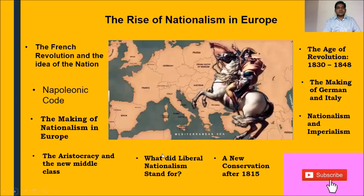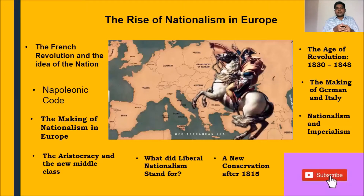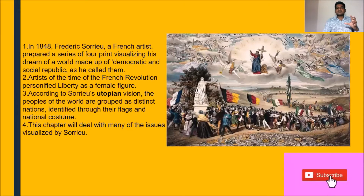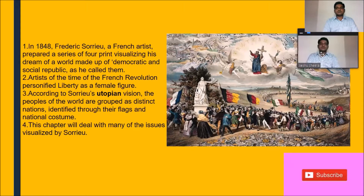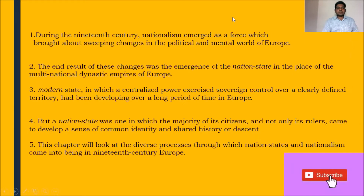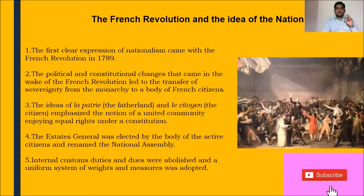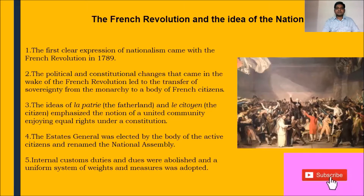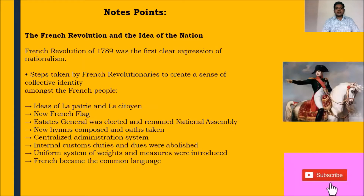In the previous video, Part 1 of Rise of Nationalism in Europe, we discussed the introduction of the chapter. We discussed how the lesson begins with the painting of Fredrick Saru, then we went on discussing about the difference between a nation state and a modern state, what are the key learnings from the French Revolution, and how did the idea of a nation emerge. We then learned the notes points.